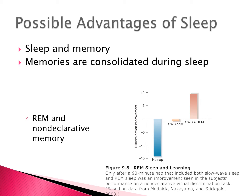In that task, participants were trained and then given either no nap, a nap with slow-wave sleep only, or a nap with both slow-wave and REM sleep. With no nap, they actually did worse in the second session. With slow-wave sleep only, they performed about the same. But when given a nap that included REM sleep, performance improved on the non-declarative visual discrimination task.